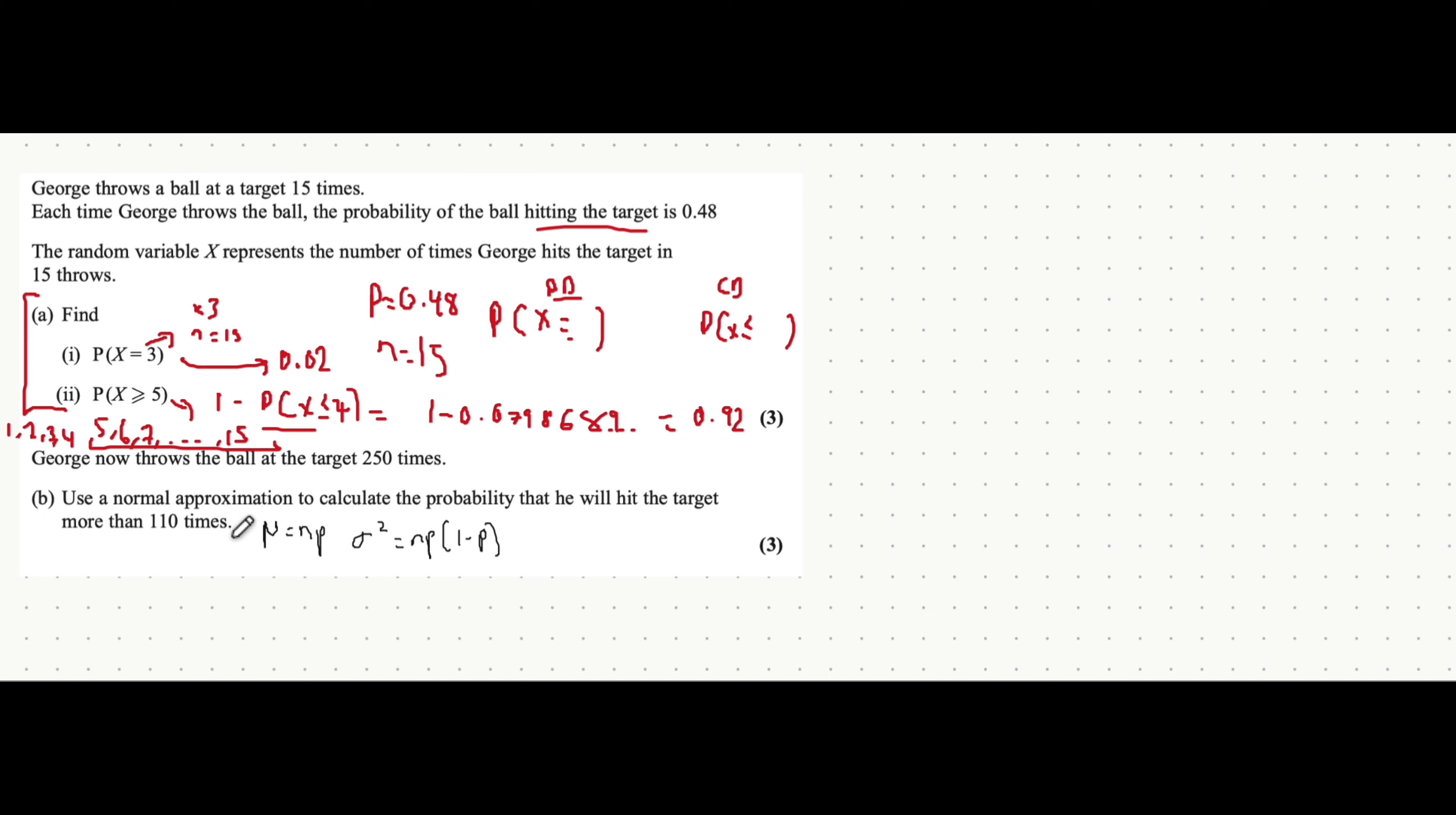Let's now move on to approximation. So in the normal approximation, we need two things. We need the mu, the mean, and the square of the standard deviation or the variance. Now, the mean can be found by multiplying the sample size by the probability in the binomial distribution.